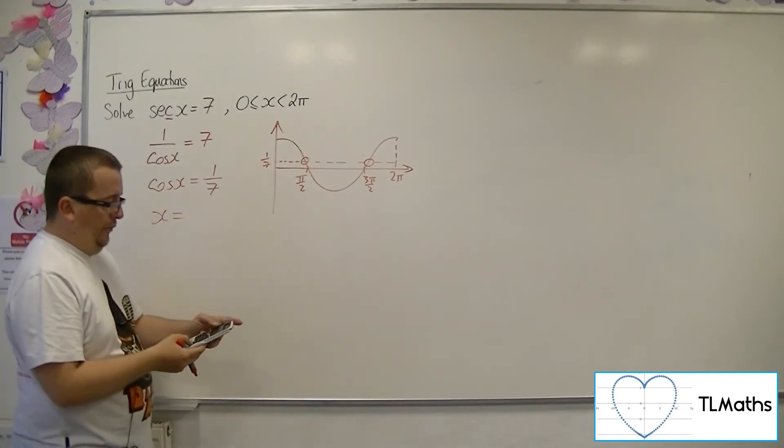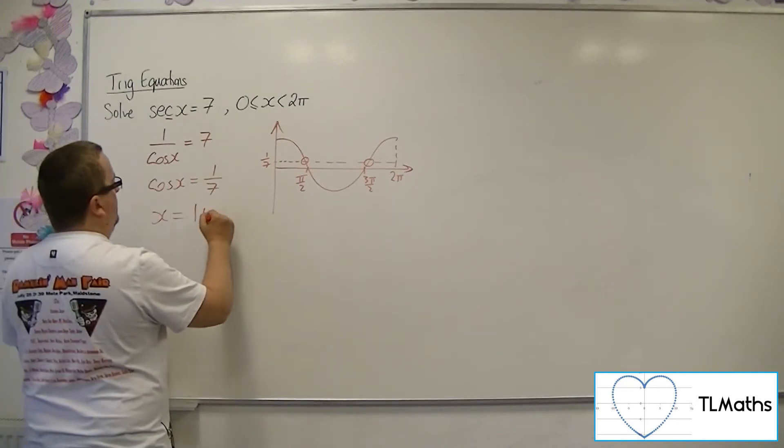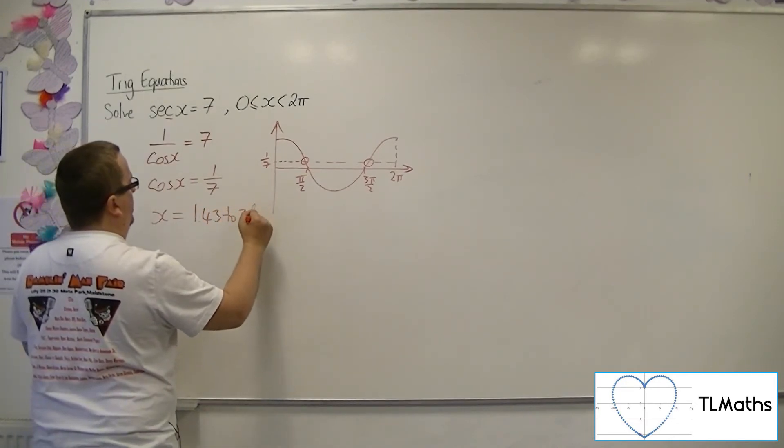If you inverse cosine 1 over 7, you get 1.43 to three significant figures.